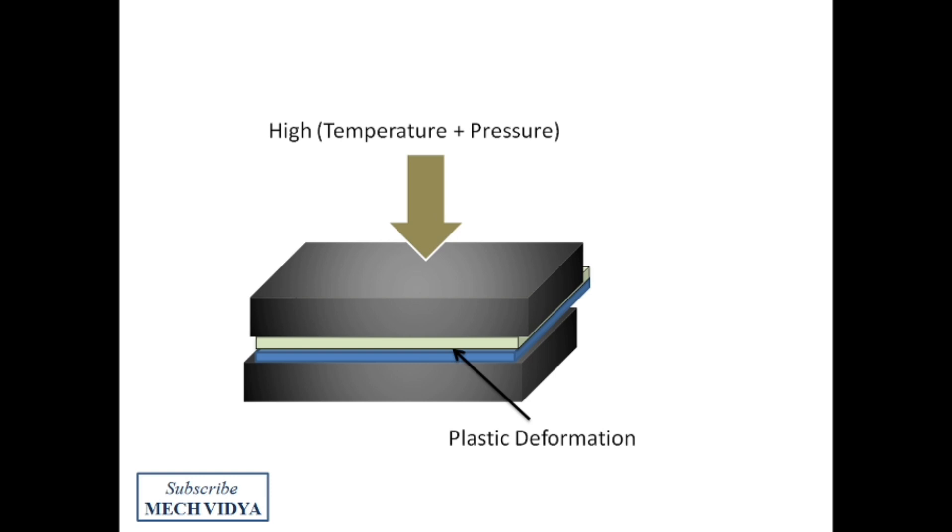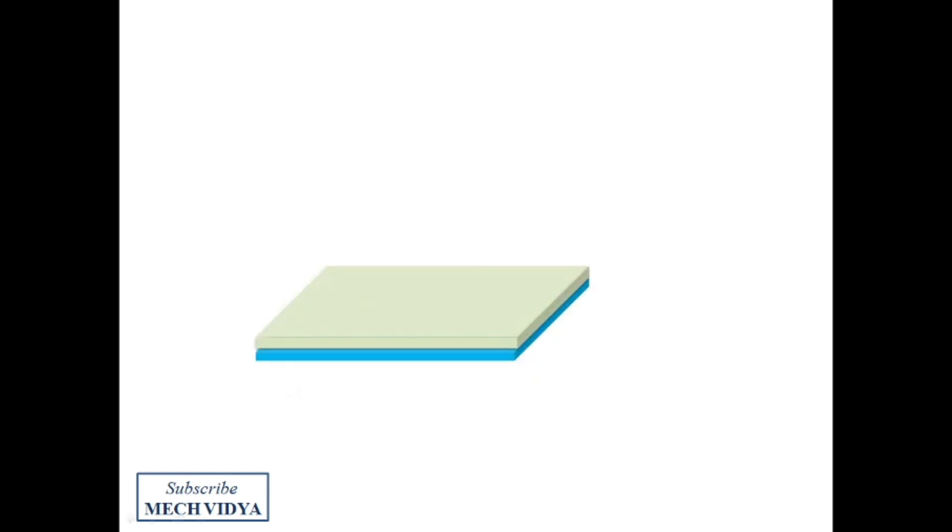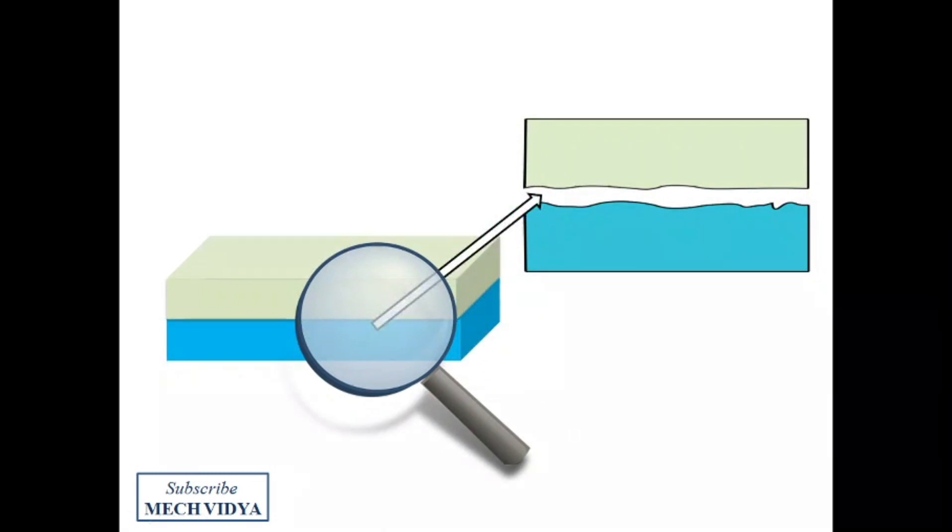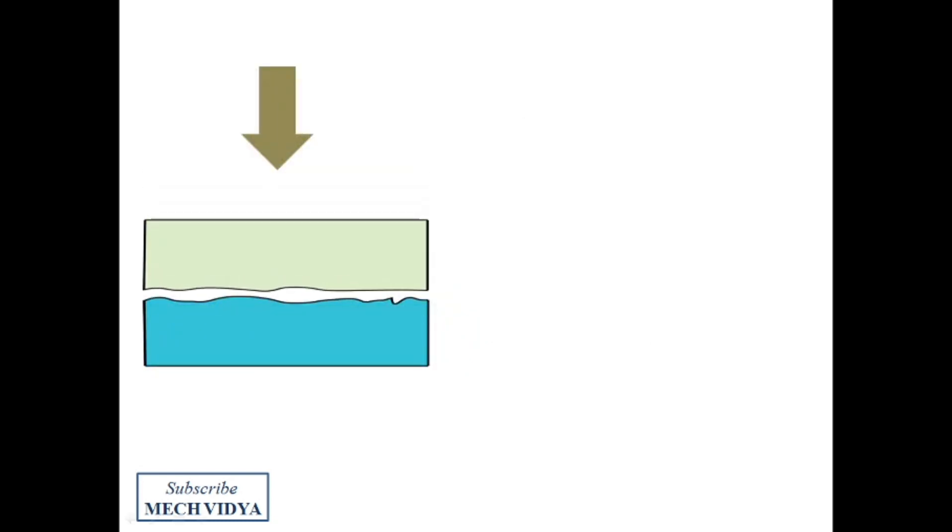So the question is, what happens actually at the interface? Now to understand this, let us zoom at the joint interface. Edges of any solid may look smooth apparently, but if we look closely, the edges have numerous peaks and valleys. So when the plates are heated under high pressure, these peaks and valleys collapse and diffusion of atoms starts. As we go on applying the pressure under elevated temperature, gradually plastic deformation starts and two metal plates start to join permanently.